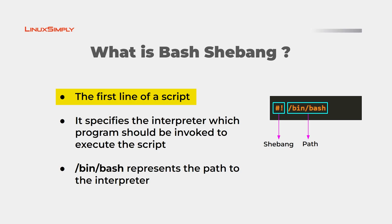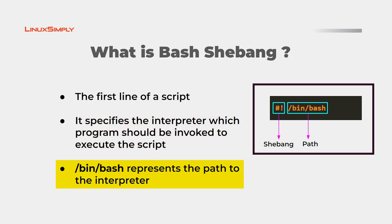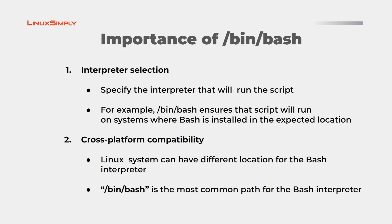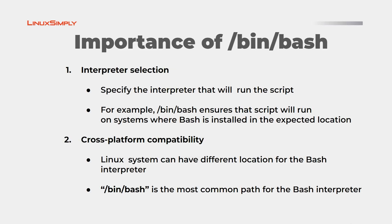The shebang allows you to write scripts in different scripting languages and use the correct interpreter to execute them. When you try to execute the script, the operating system reads the shebang line and uses the required interpreter to execute it. Without the shebang line, the operating system would have no knowledge about the interpreter and cannot execute the script. For example, when using the bash interpreter, the /bin/bash statement represents the path to the interpreter.